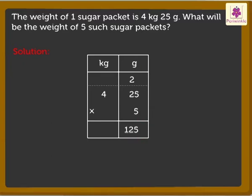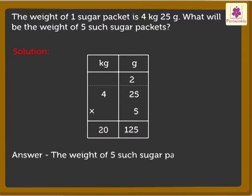Now, multiply the kilograms. That is, 4 into 5 to get 20 kilograms. So, here we got the product as 20 kilograms 125 grams. The weight of 5 such sugar packets is 20 kilograms 125 grams.